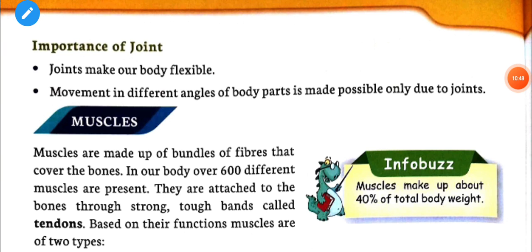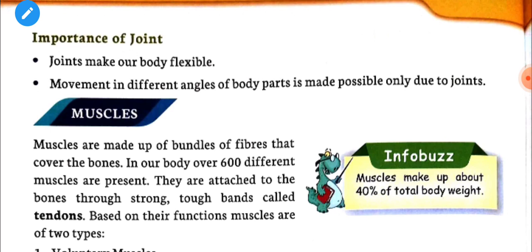Joints make our body flexible, and movement in different angles of body parts is made possible only due to joints. We are able to move our hands, fingers, legs, and neck because joints play an important role. Due to joints, we can move our body parts and have flexibility.